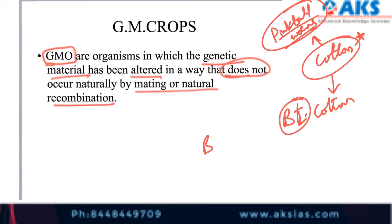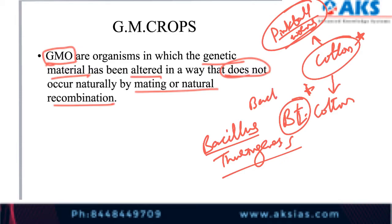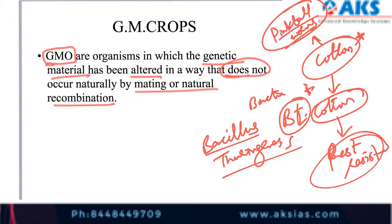What is Bt cotton? Bacillus thuringiensis is the scientific name. This is a bacterium that is introduced into the cotton plant so that it becomes pest resistant — meaning the pests cannot enter into the cotton crop and destroy it. This is one of the advantages of genetically modified crops.